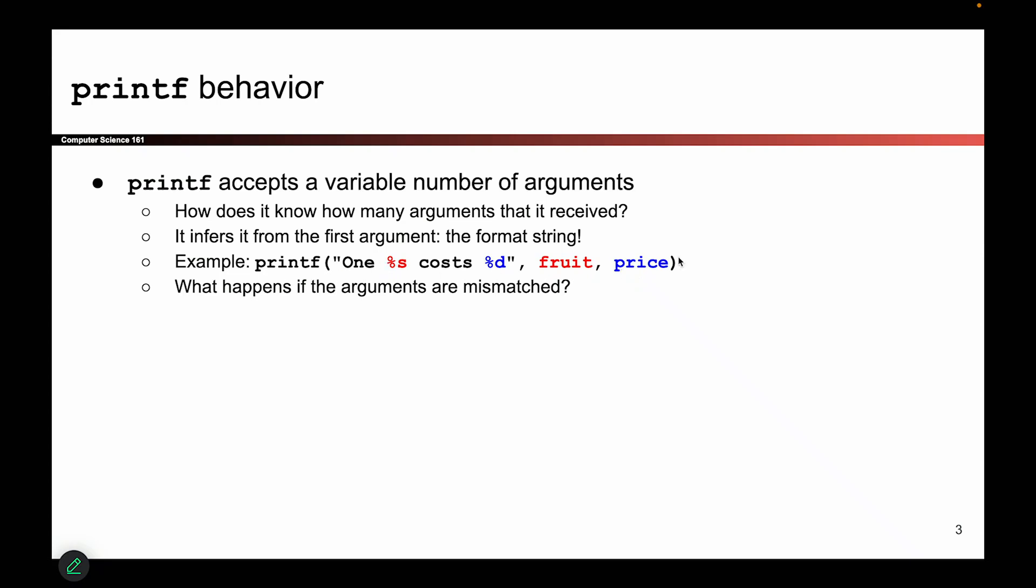When the C program hits this printf line, it's going to print 'one', then it sees a percent symbol, so it takes the first argument fruit and substitutes its value into percent s. Then it prints 'costs', sees another percent symbol, and looks at the next unused argument which is price. It substitutes the price value into the percent d. So this will print out the current value of fruit and the current value of price.